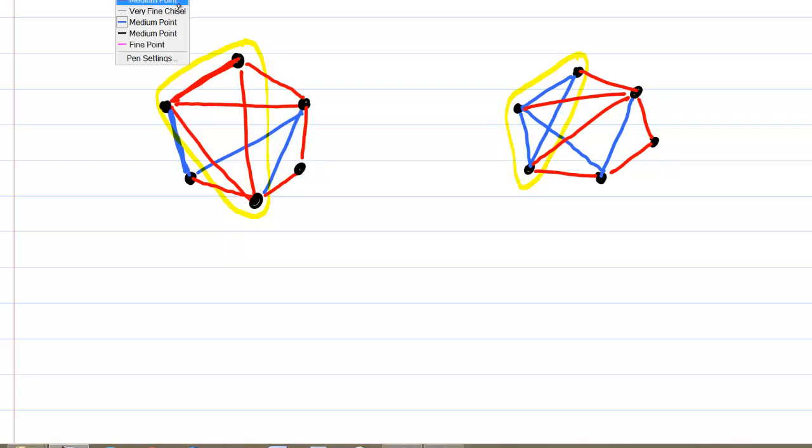So the proof starts by picking a particular individual, which we'll call person X, and examining X's relationship to the other five people in the group.